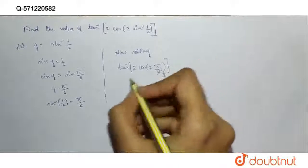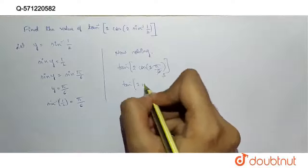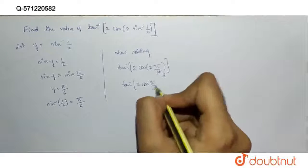2, 3 is 6. Then, tan inverse of 2 cos pi by 3. That is cos 60 degree.